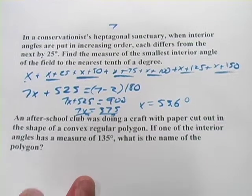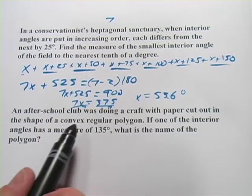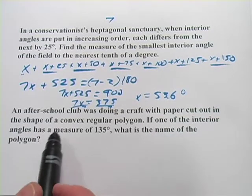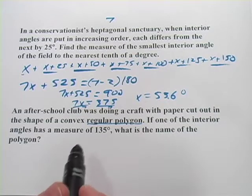We've got one more here. This one might be a little tricky. It says, an after-school club was doing a craft with paper cut out in the shape of a convex regular polygon. Regular polygon means all the angles are the same.